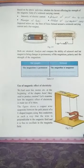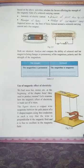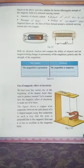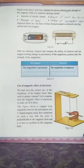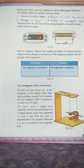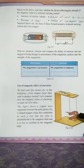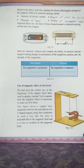Hi children. In the last session you came to know that a current-carrying conductor, when placed in a magnetic field, experiences a force and it moves in the direction of that force. The rule we discussed is Fleming's left hand rule. How can we apply it to find the direction of motion of the conductor?